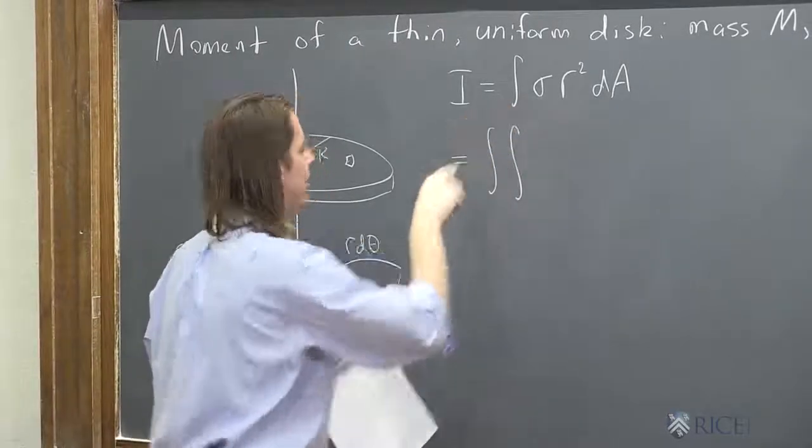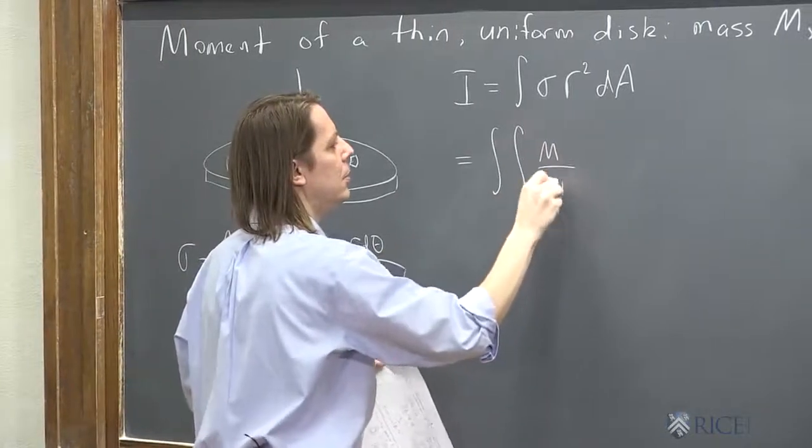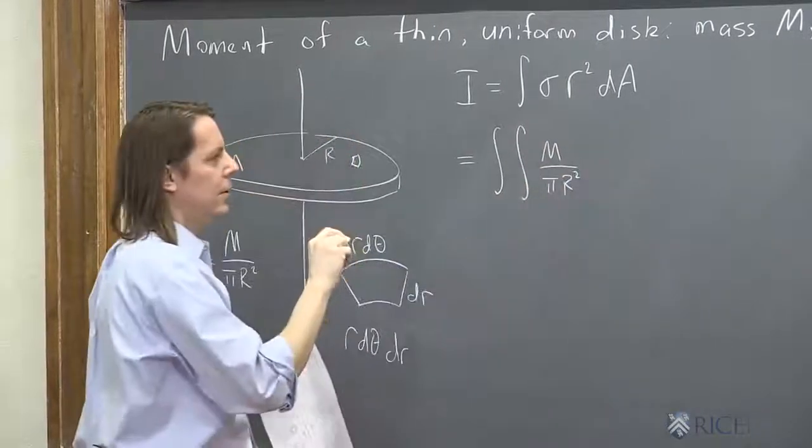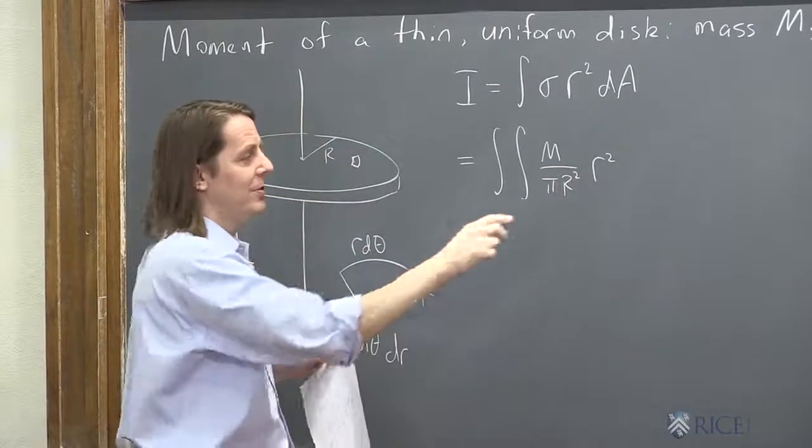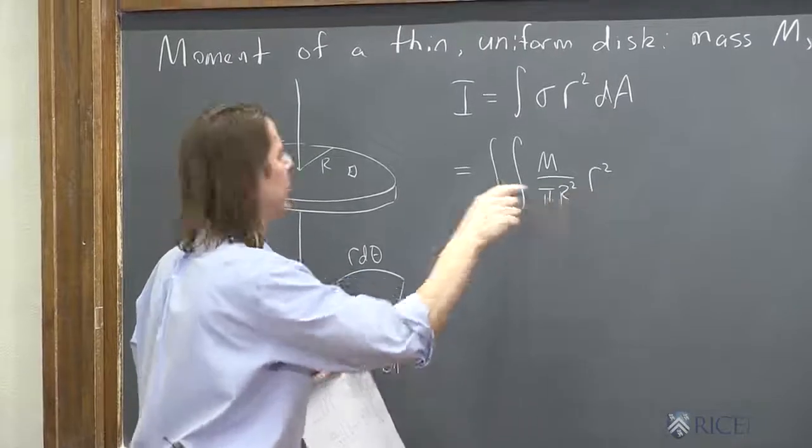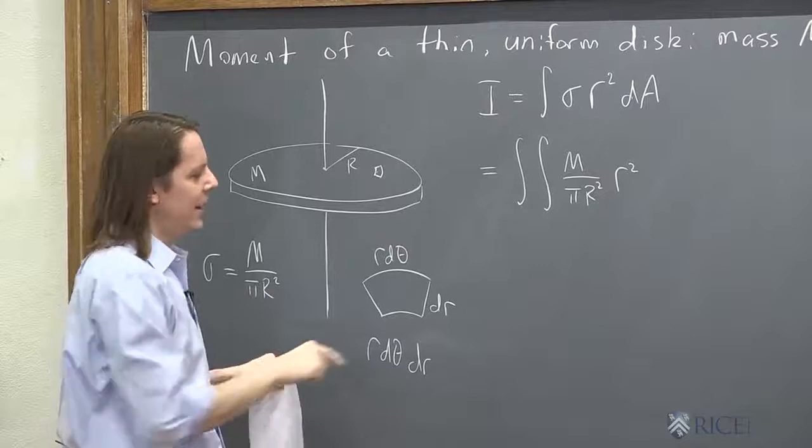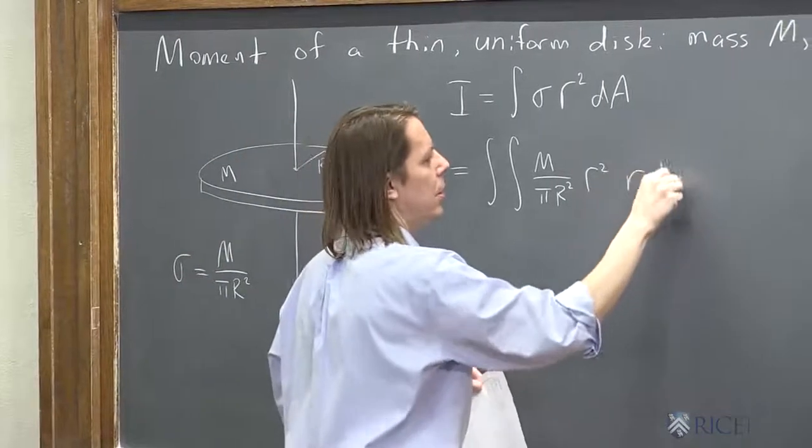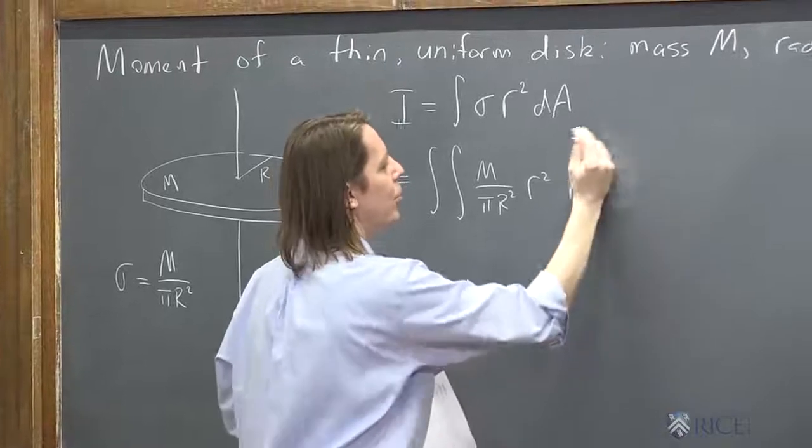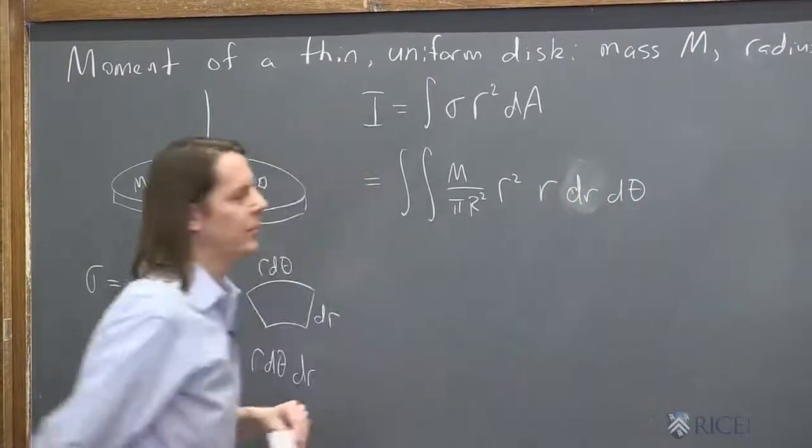We're going to plug in for sigma M over pi R squared. And then we're going to say R squared. So it's important to keep up with it. This is big R, is the radius of the disk. Little r is how far each element is from the rotation axis. And then we're going to put in R d theta dR. Or no, we're going to put R dR d theta. The order doesn't matter. It just helps you set it up.